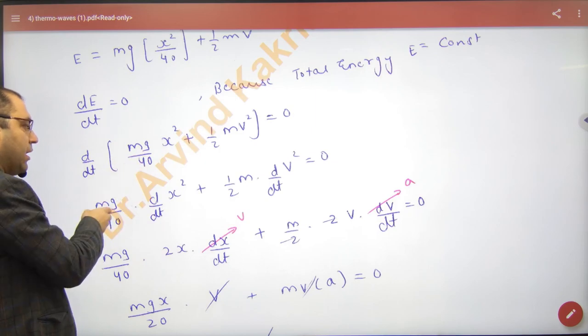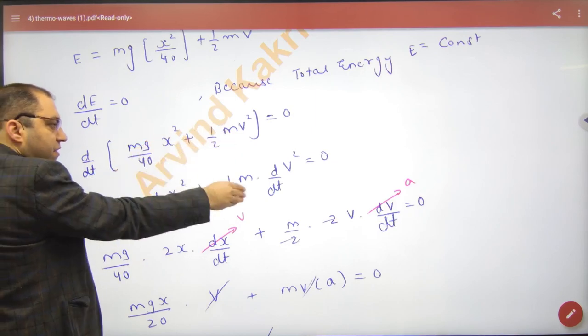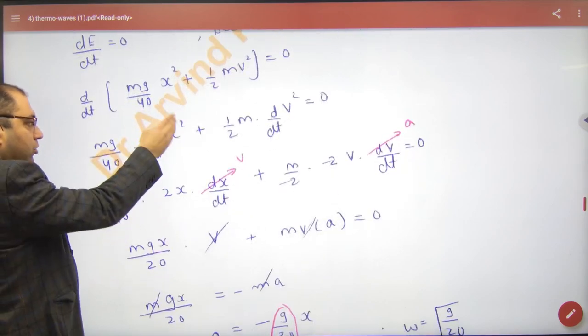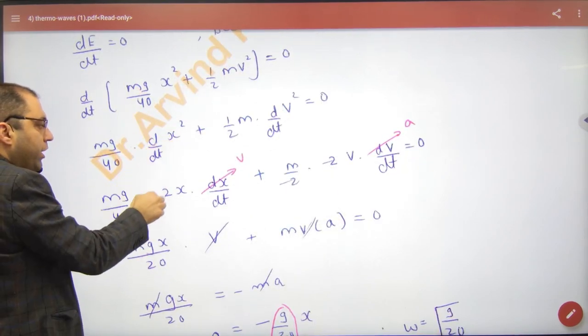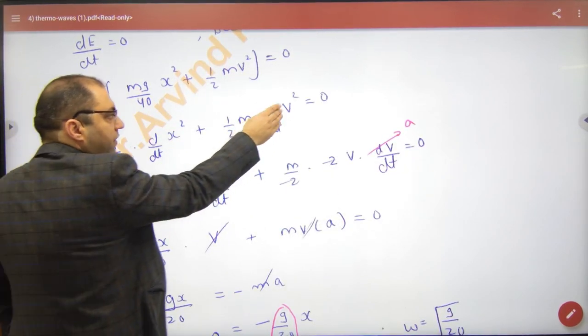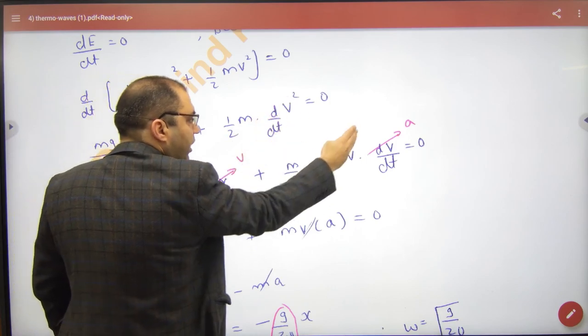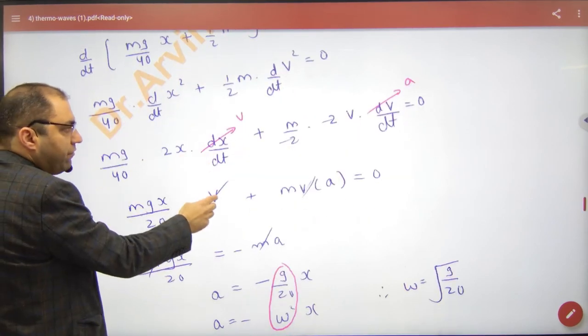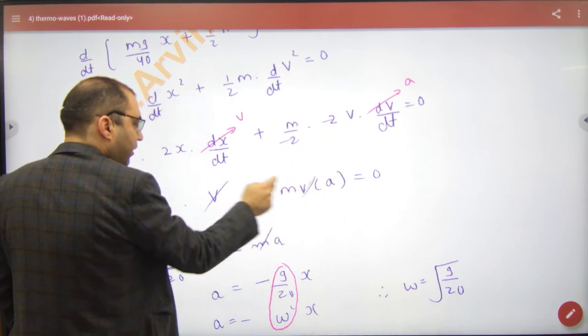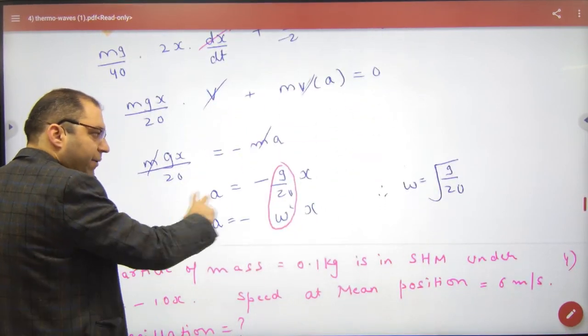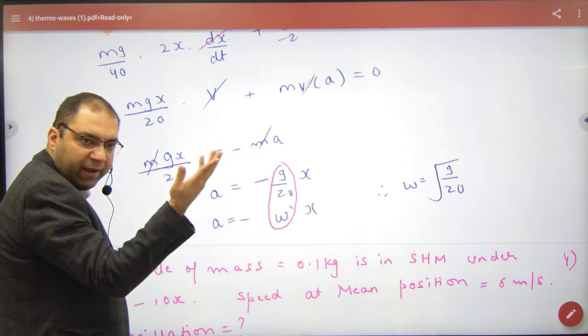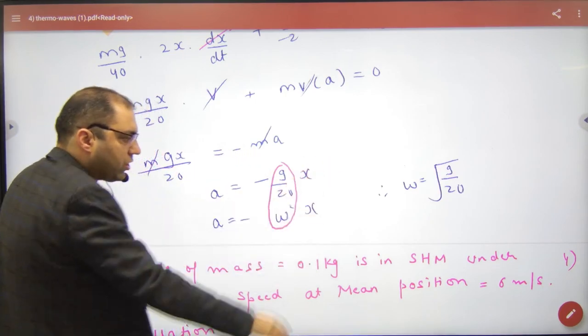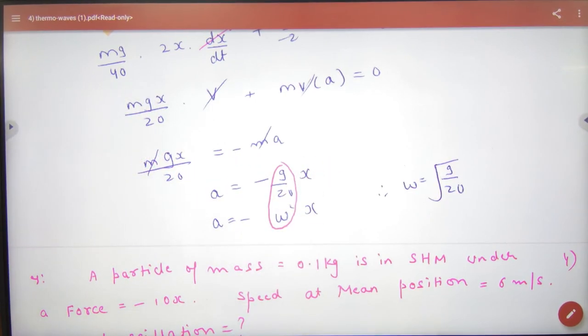mg by 40 - differentiation of first term plus differentiation of second term. What will x² be? 2x times dx/dt. And what will v² be? 2v times dv/dt. What is dx/dt? v. Similarly, dv/dt is a. Now we have an equation relating a and x, which we've seen before in SHM's equation. Compare to calculate omega.